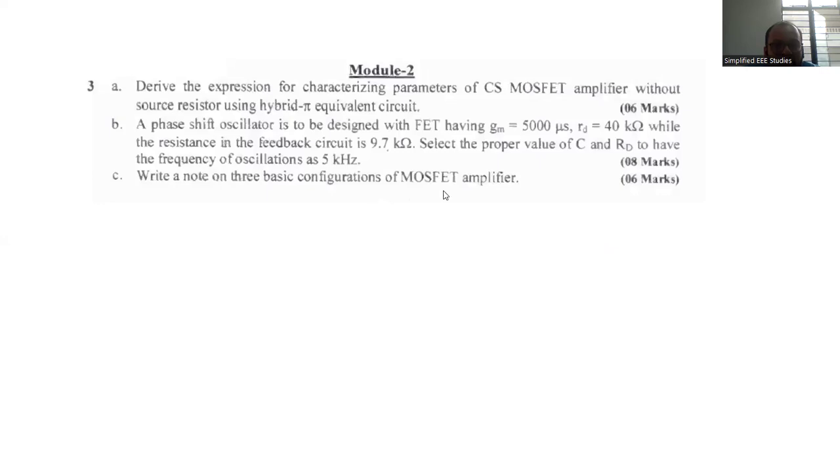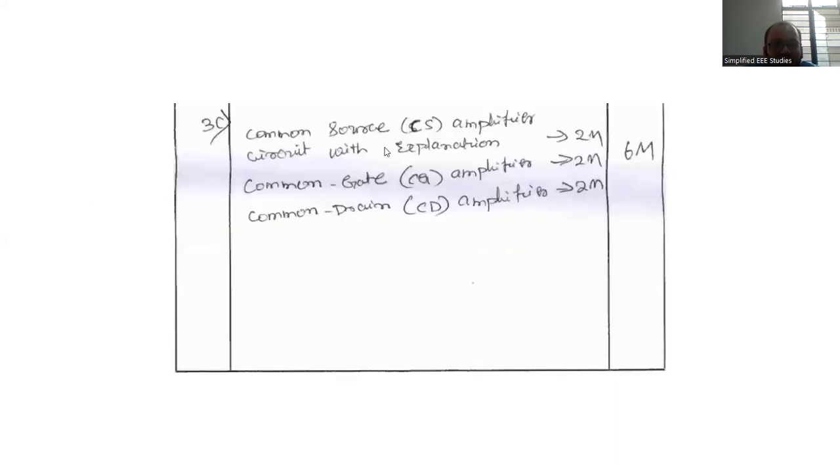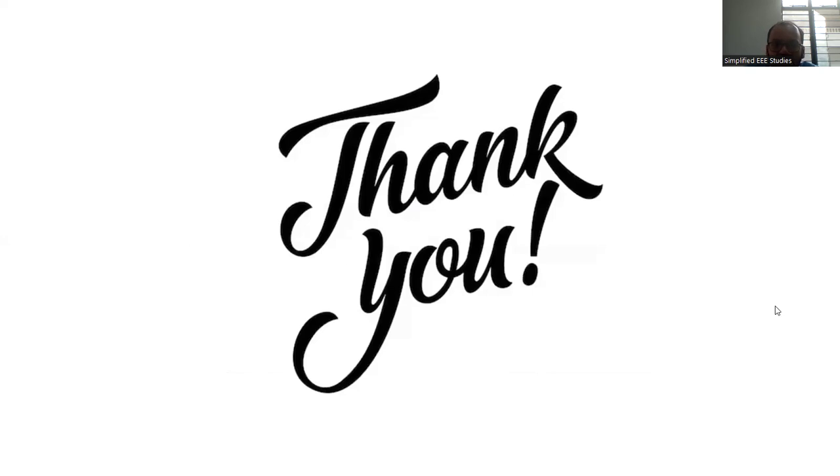Question 3C: Write a note on basic configuration of MOSFET amplifier. Common source amplifier, CS amplifier, CG amplifier, CD amplifier. Weightage is 6 marks. You can follow up this answer key in a proper fashion. Definitely you can score better marks. Similar kinds of questions will be asked in the forthcoming examination. It is applicable for regular examination as well as supplementary examination. Let us meet in the coming session and that will be part 2. Happy learning. Please prepare accordingly. Surely you can clear the examination. Thanks for watching this video. If the video is useful for you, kindly share with your friends. Thank you.